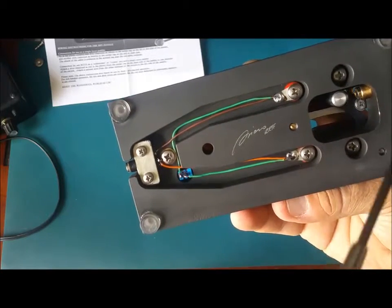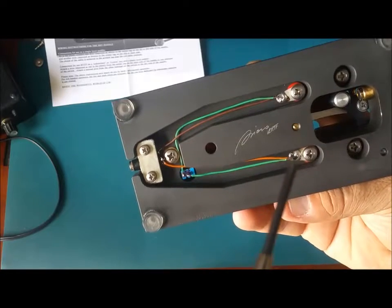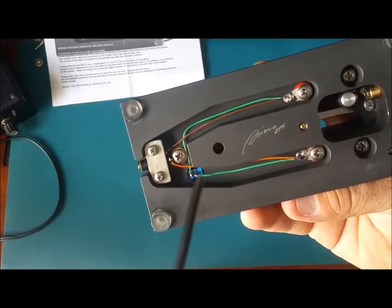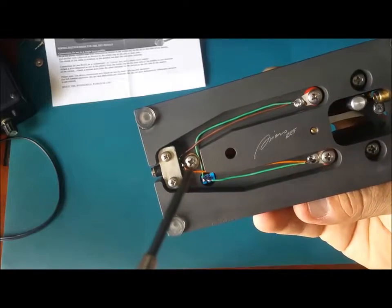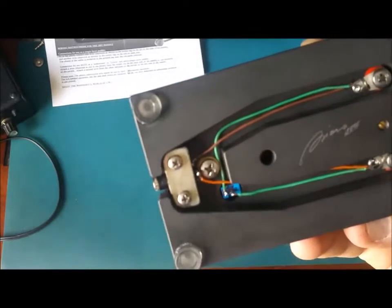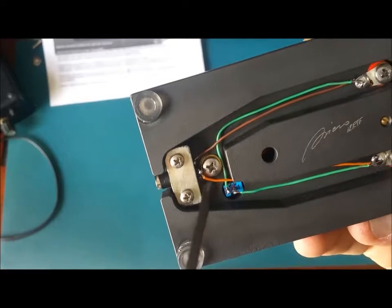And then the green one, see, goes from touches both contacts and then it passes through to the switch. And then here you can see the ground.